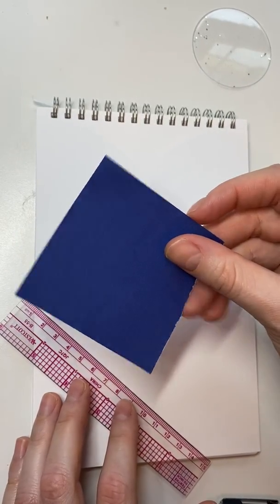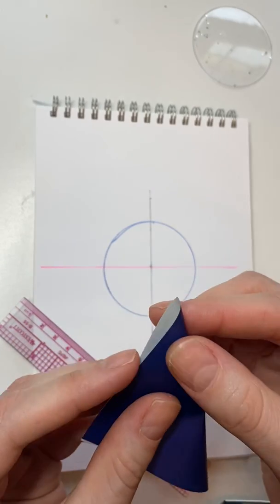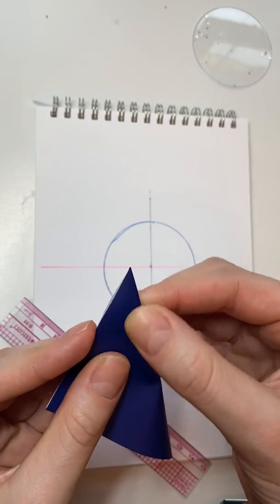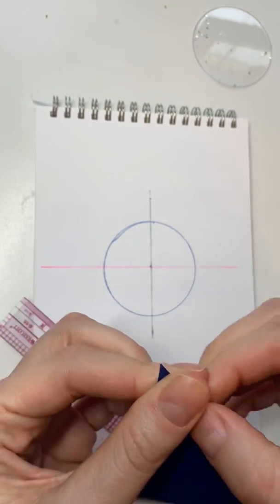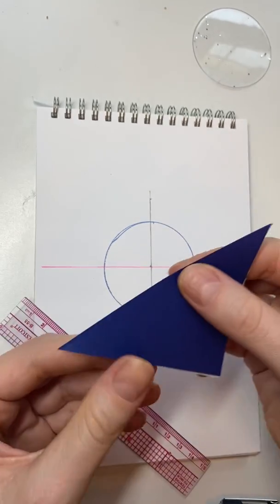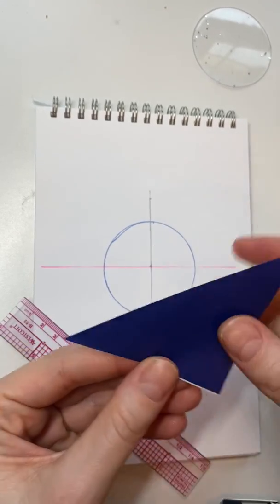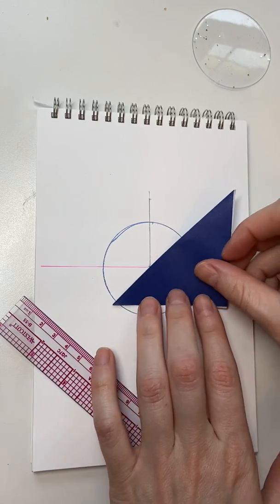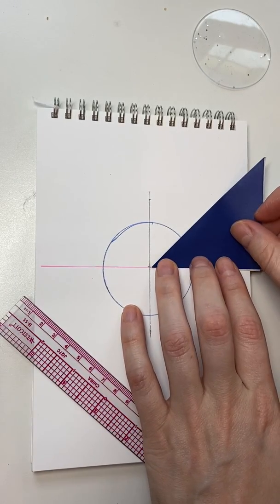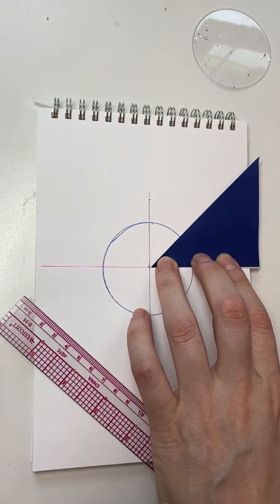Take a piece of paper. This is a bit of an origami piece of paper. And you're going to fold the corner in half like this. And you have created for yourself a beautiful 45 degree angle.